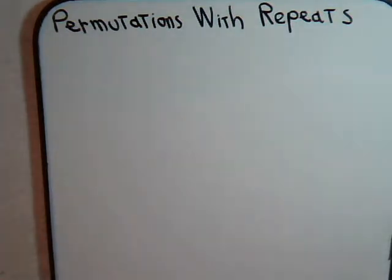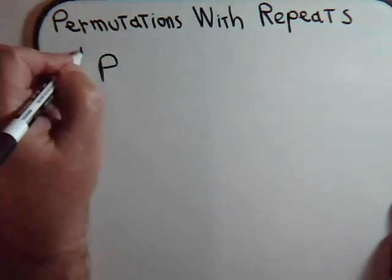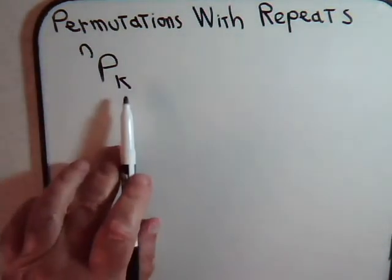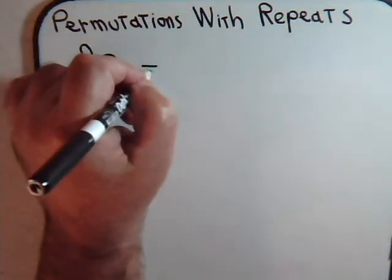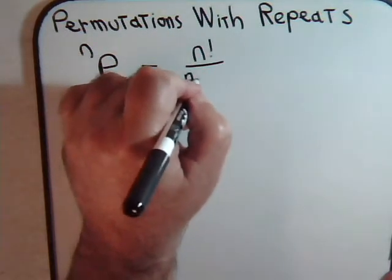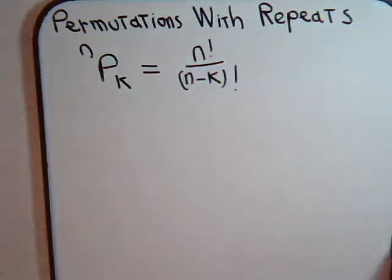We've been working with different types of permutation problems and we've developed the general permutation formula: if you have n number of distinct objects and you select k number of them, the number of ways you can do that is n factorial divided by n minus k factorial.